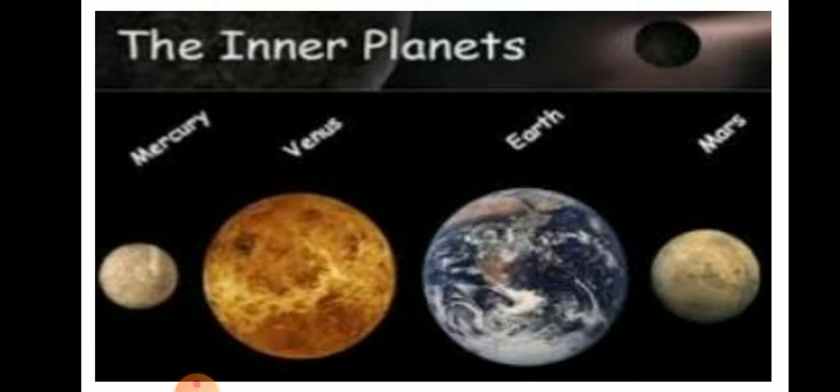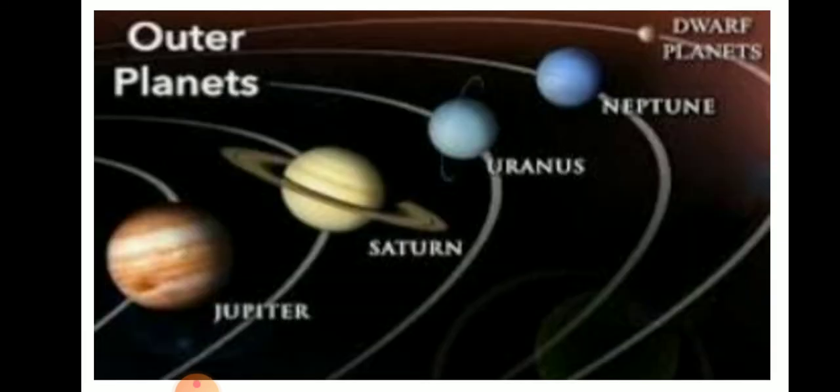Mars has a period of revolution of 687 days and has two moons. It is covered with red dust, so it appears red. That is why it is called the red planet.